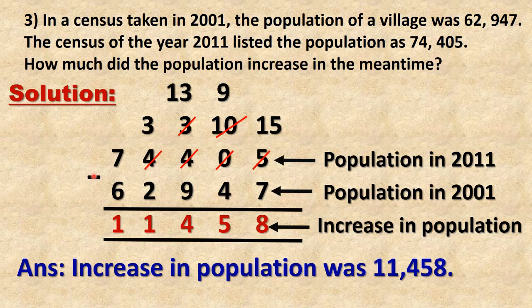Statement: 74,405 (population in 2011) minus 62,947 (population in 2001). 5 minus 7 not possible — borrow from tens place, but tens digit is 0, so borrow from hundreds: 4 becomes 3, 0 becomes 10, then borrow from tens — 10 becomes 9, 5 becomes 15. 15 minus 7 is 8. Tens place: 9 minus 4 is 5. Hundreds: cannot subtract 9 from 3, borrow from thousands — 4 becomes 3, 3 becomes 13. 13 minus 9 is 4.